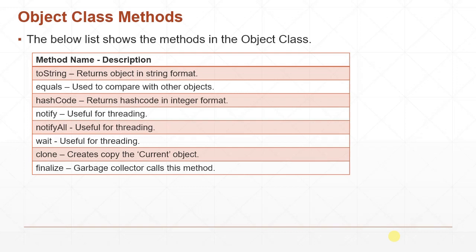We will learn more about hashCode in another video. Here we are just looking at Object class basics and overview. The notify, notifyAll, and wait methods are useful for threading. The clone method creates a copy of the existing object and returns it — the returned copy will have the same data member values.